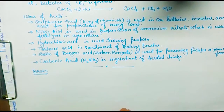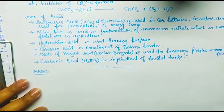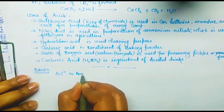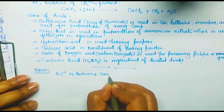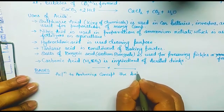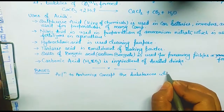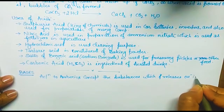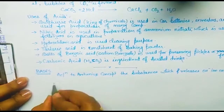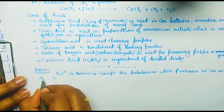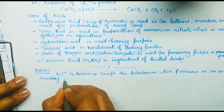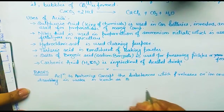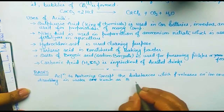As we defined the Arrhenius acid, similarly we define Arrhenius base. According to Arrhenius concept, a substance which produces or releases OH minus ions on dissolving in water is known as a base.